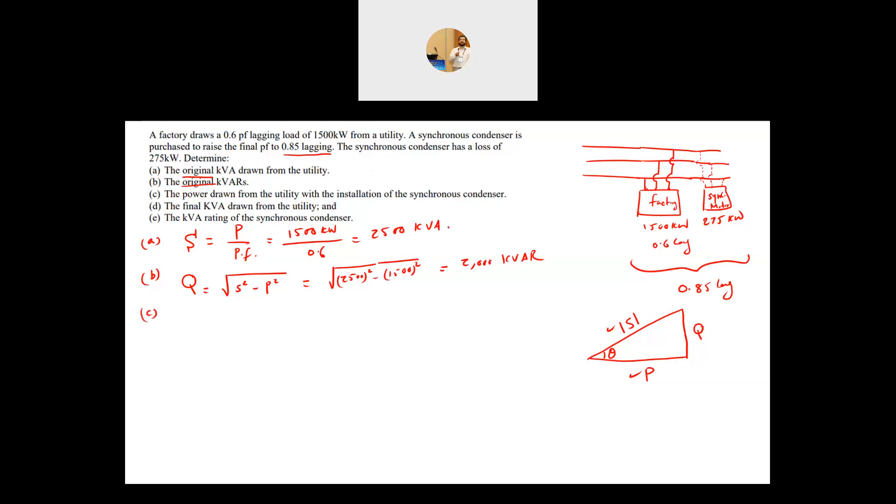Number C or part C, what is the power drawn from the utility with the installation of the synchronous condenser? Now when we add the condenser, what is the total P? We know the power coming from the factory, we know the power coming from the synchronous condenser. So the P total will be equal to 1500 plus 275 and this will give me 1775 kilowatt.